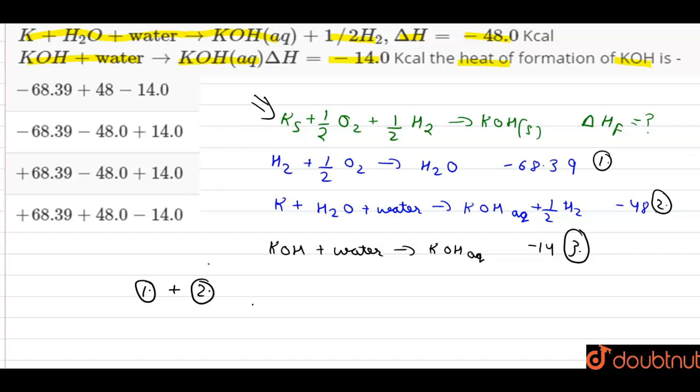We will get H2 plus half O2 plus K plus H2O plus water gives us H2O plus KOH aqueous plus half H2.